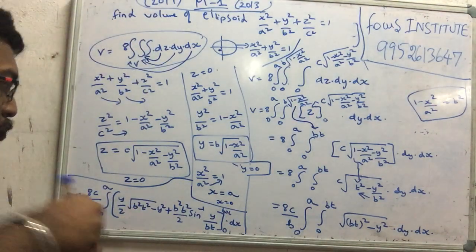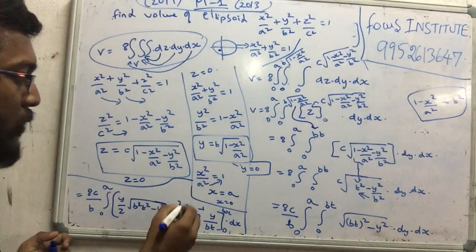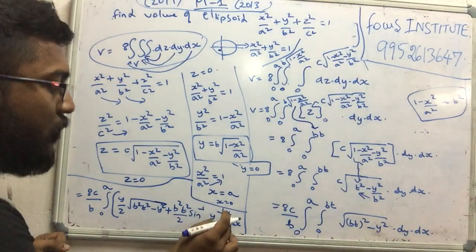y by 2 into root of b² t² minus y² plus b² t² into sin inverse of y by bt into 0.